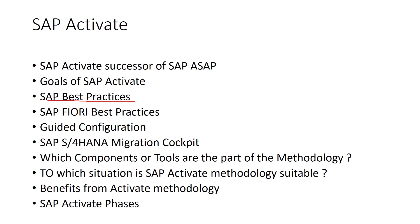SAP Best Practices was introduced in SAP Business All-in-One more than 10 years ago. It was a pre-configured SAP solution based on a standard ERP system or SAP CRM system. The difference between SAP Business All-in-One and a standard ERP system was that Business All-in-One included customizing specifically pre-configured for medium-sized enterprises.